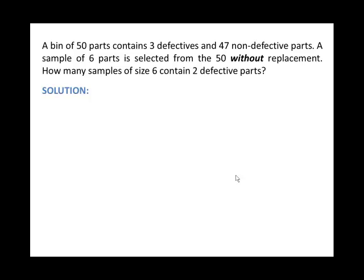I have a bin that contains 50 parts. Three of them are defective, 47 non-defective. I'm happy that I have more non-defective. That's a good sign. So let me draw here a bin. Just imagine this is a bin. And there's 50 parts in here.